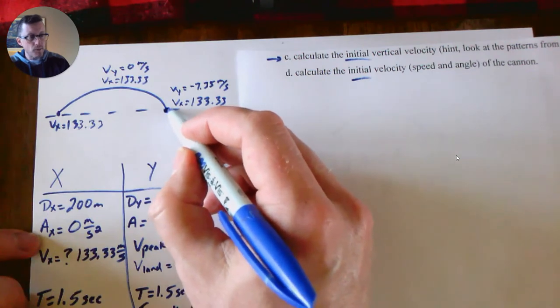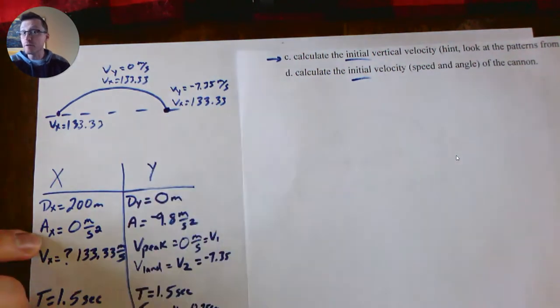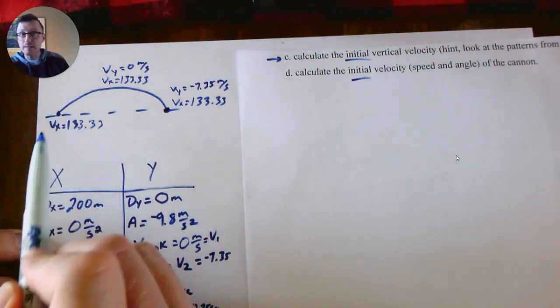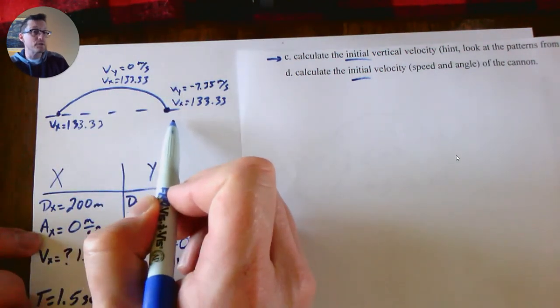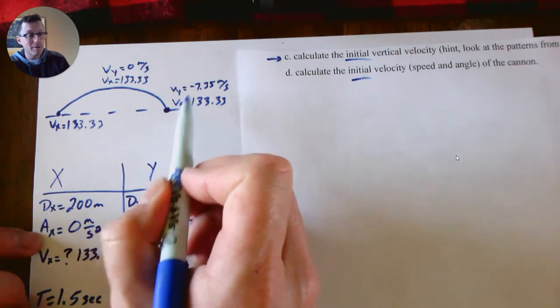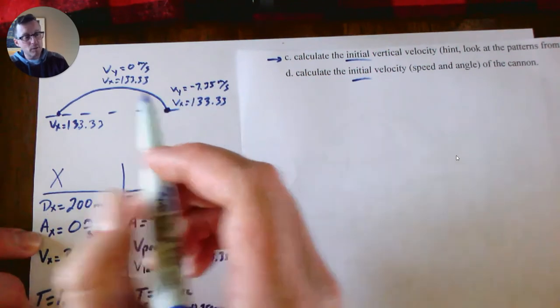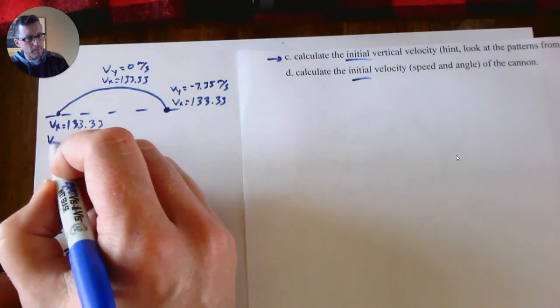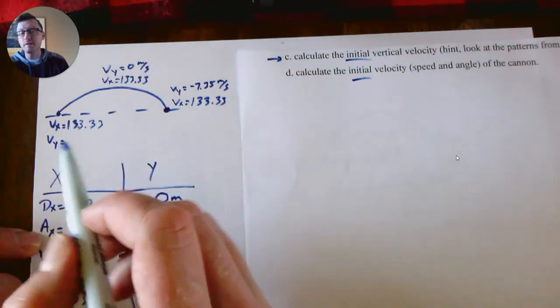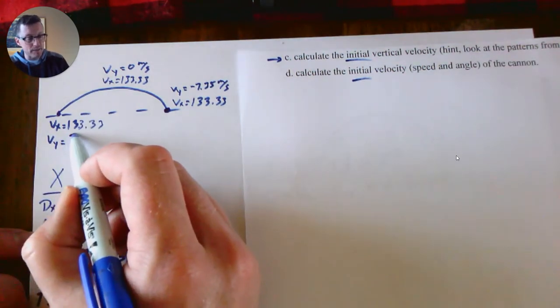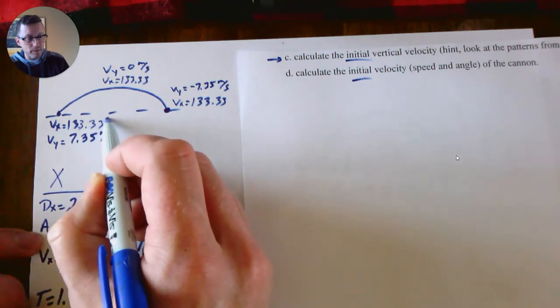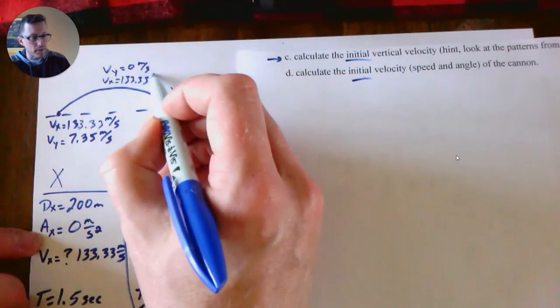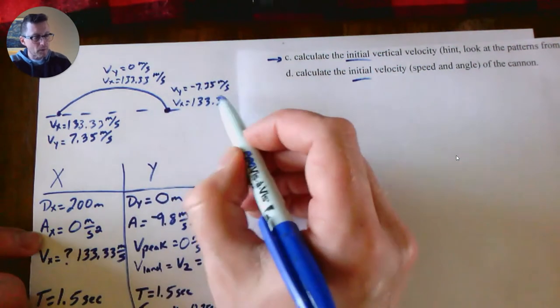We actually already know the answer to this question because remember, when the projectile lands, if we are talking about the same height, the Vy when it lands is the same number but it's falling downward, and that's why a negative. So we already know the Vy here—instead of being negative 7.35, it's a positive 7.35. That was one of those patterns that we said we have to make sure we get memorized.